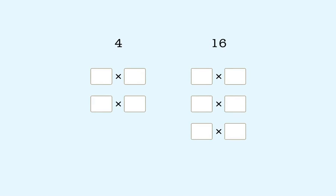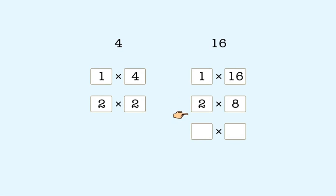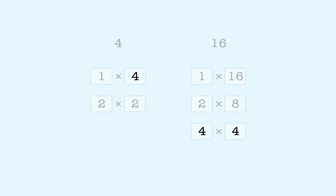Here's another example. Write the factors for both numbers. Then figure out the largest factor that is a factor of both 4 and 16. 4 is the greatest common factor of 4 and 16.